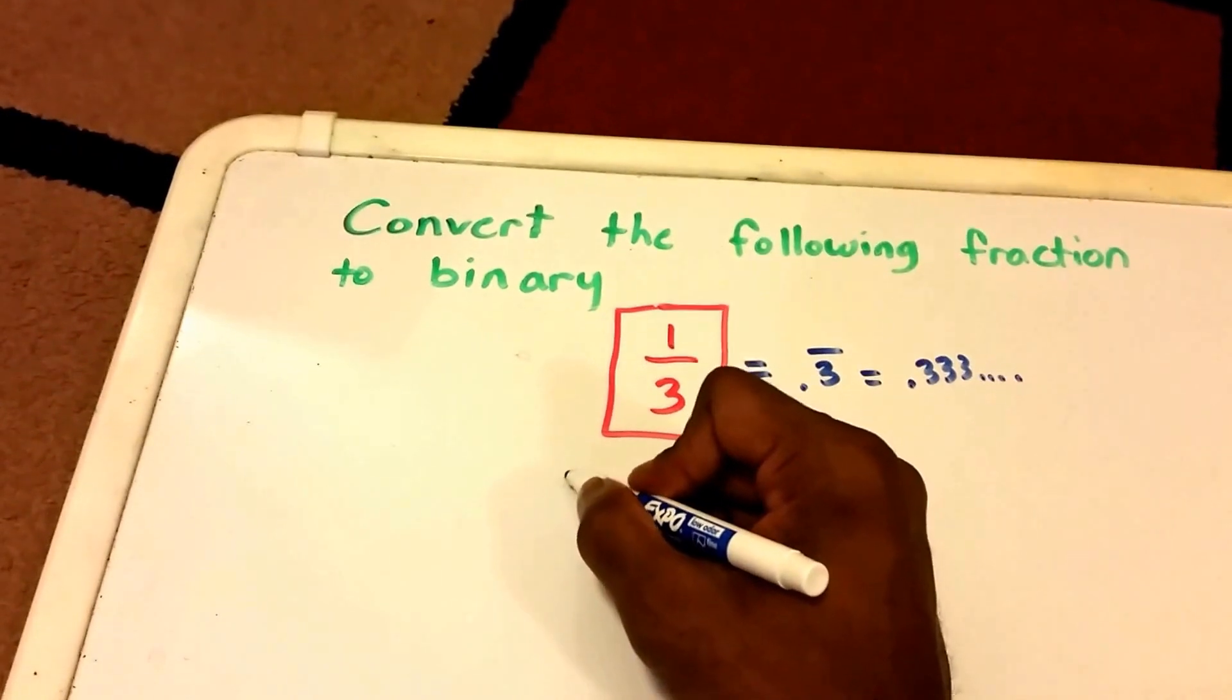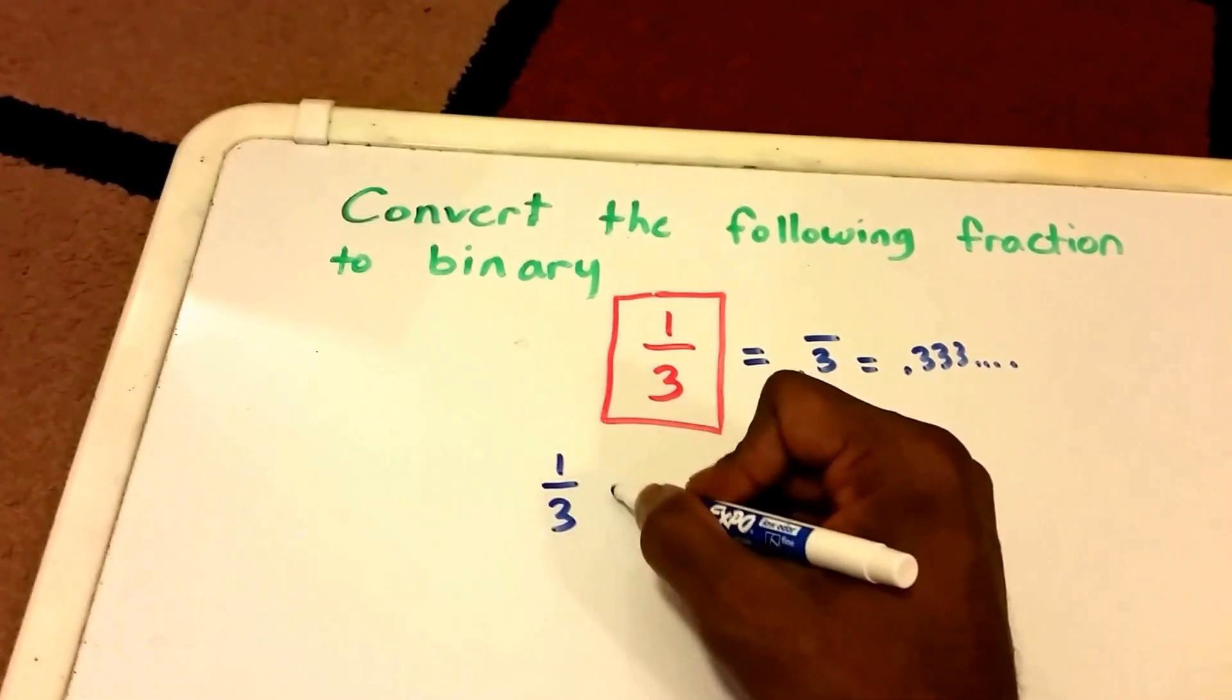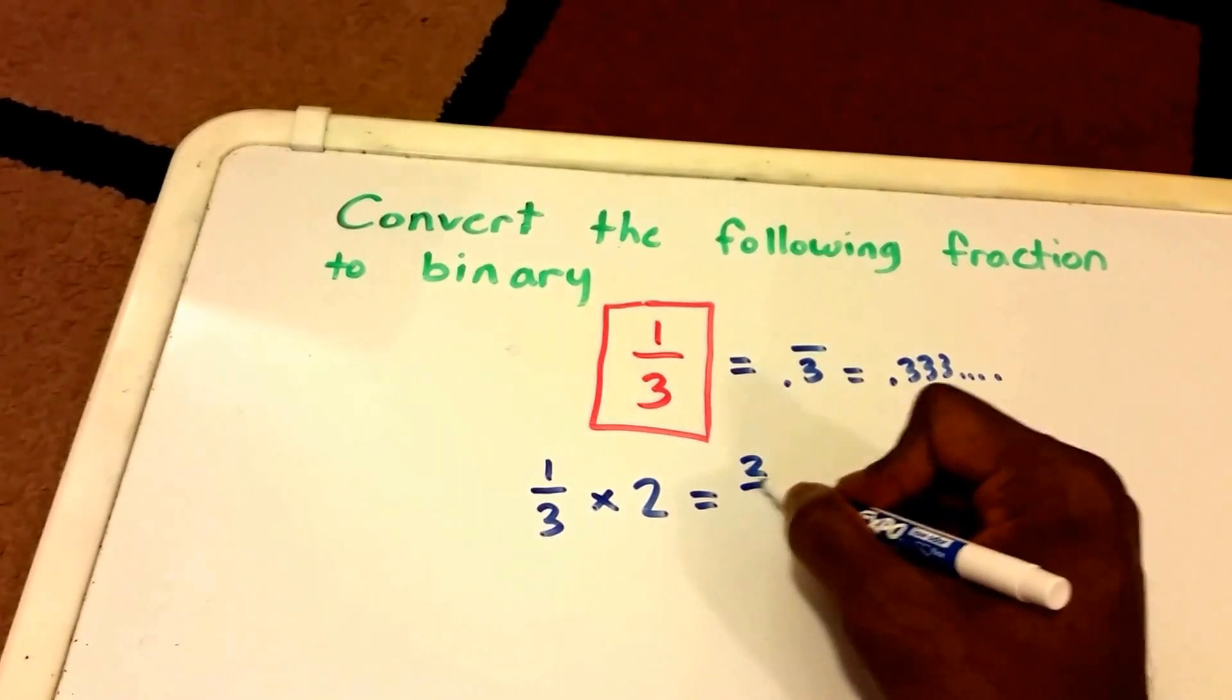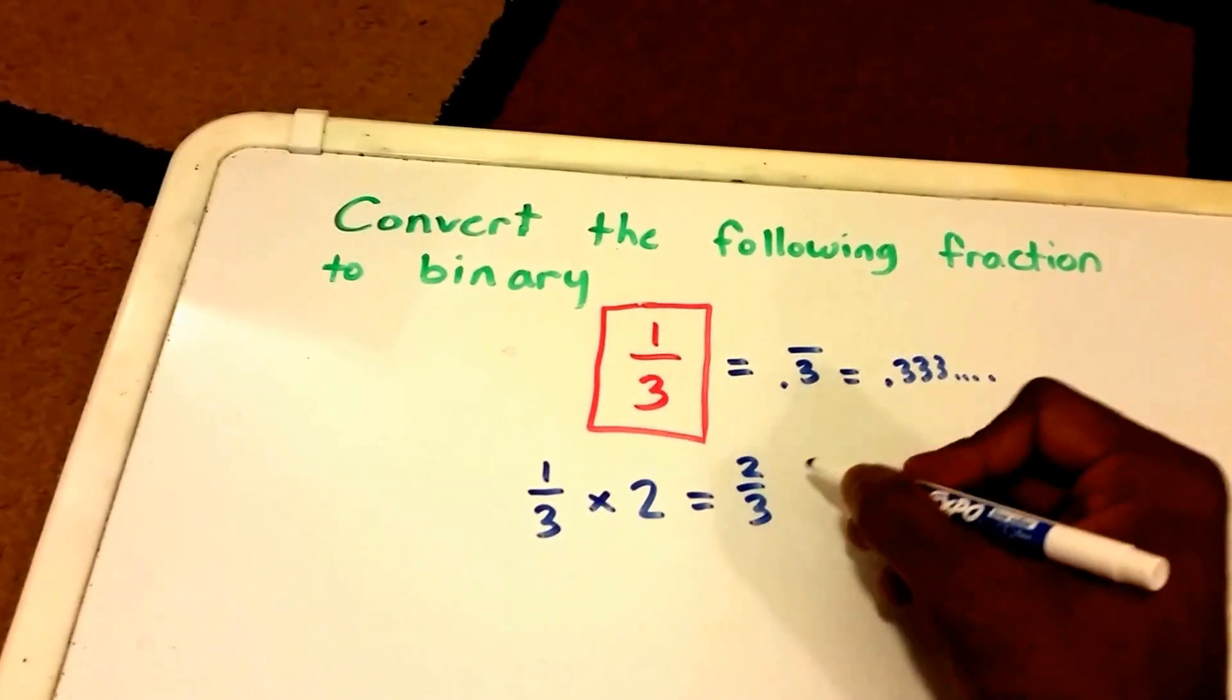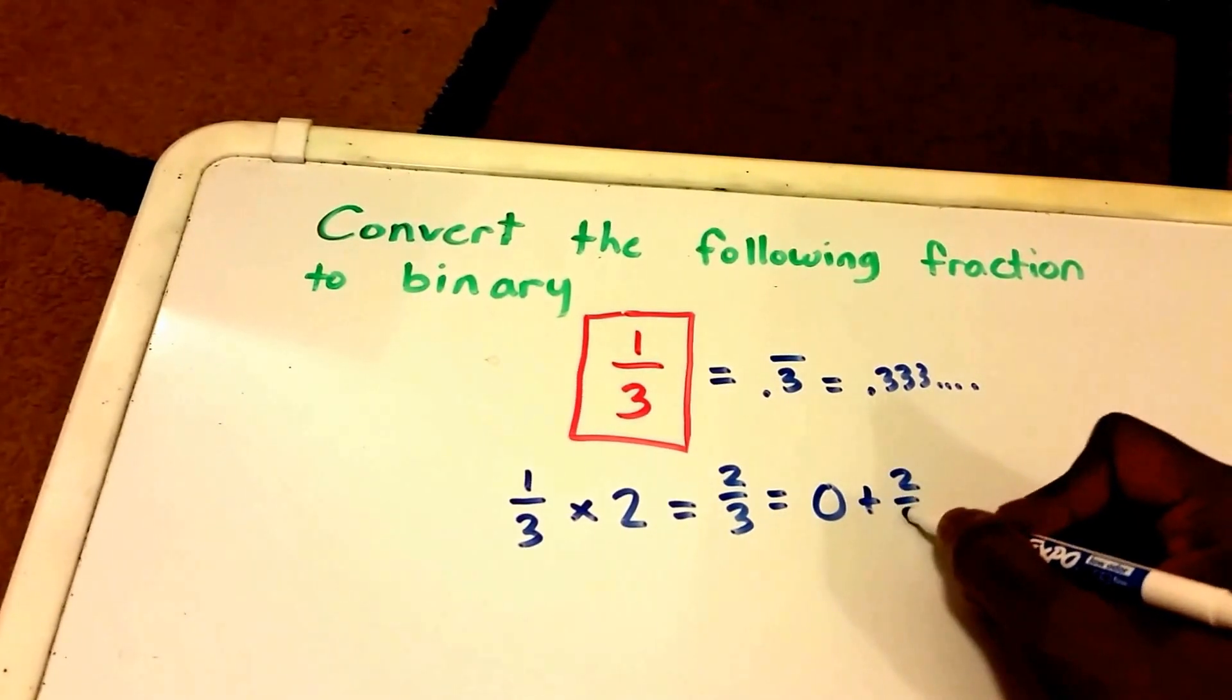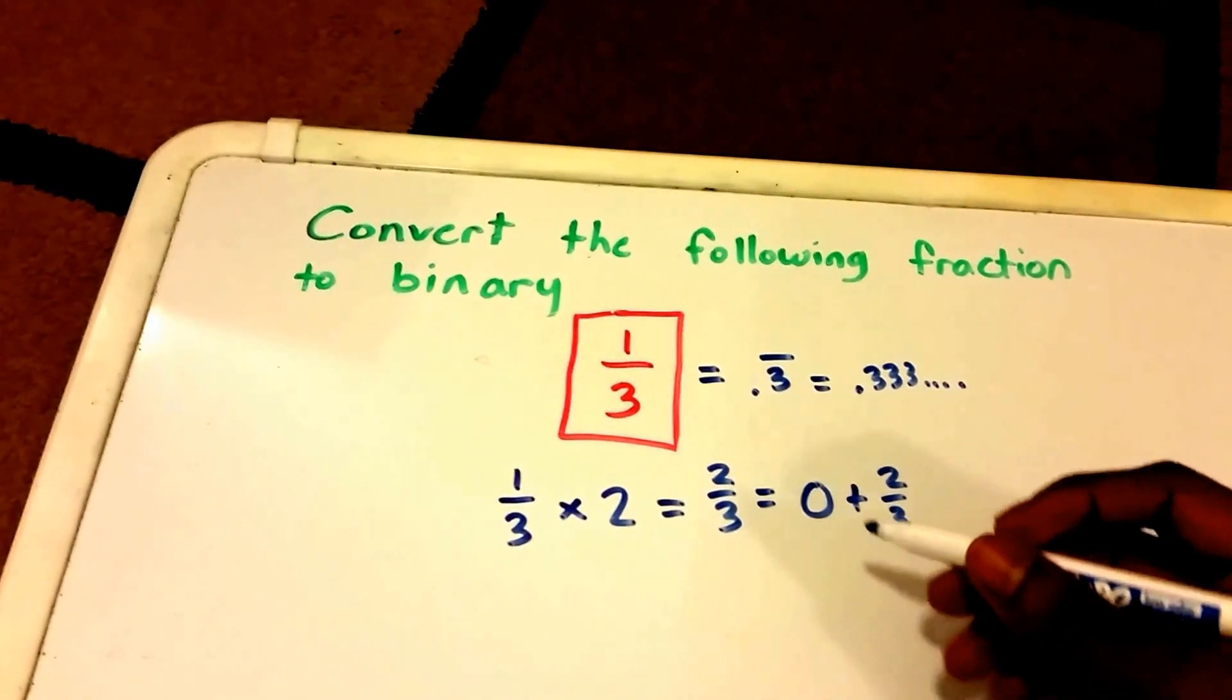Let's get started. First, we're going to start by rewriting 1/3 and multiply that by 2. This will give us 2/3. Now 2/3 is equal to 0 plus 2/3.